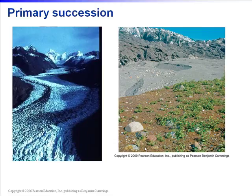Primary succession follows a disturbance so severe that no vegetation or soil life remains from the community that previously occupied the site. In primary succession, a biotic community is built essentially from scratch. The wind carries in seeds, and early plants must be able to live on soil that is effectively non-living at that point, starting to create organic matter. Over many years the community returns. A glacier scraping away all living life is a good example of primary succession.